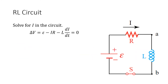Now for an RL circuit, we again start by writing out delta V equals zero for the loop. You have the battery, the resistor, and the inductor. Going clockwise with the current, the voltage drops are: ε minus i·R minus L·di/dt equals zero. There's no q here because there's no capacitor — q only makes sense on a capacitor — so all we need to find is the current.